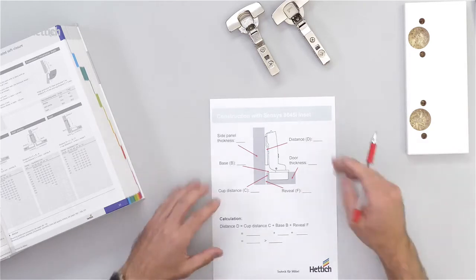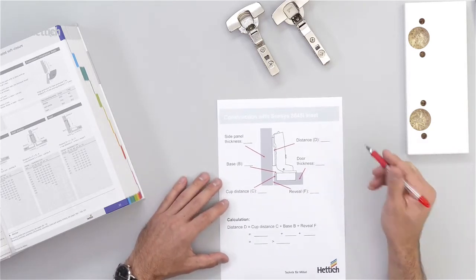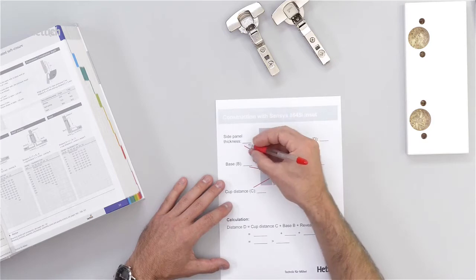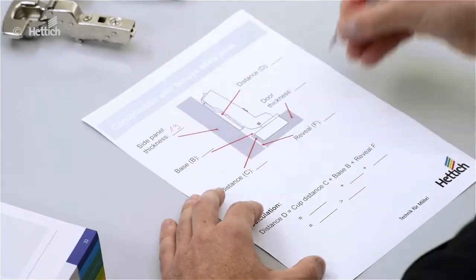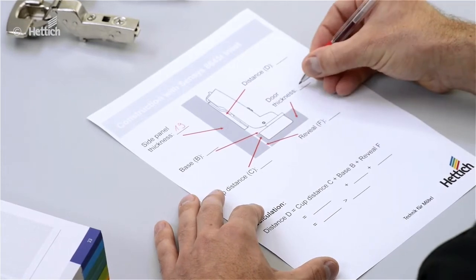So we go to the calculation sheet. The side panel thickness is given as 90 millimeters in this example. Also the door thickness is 90 millimeters.